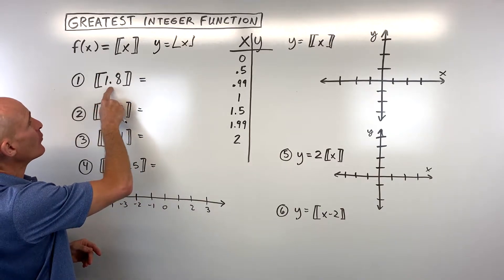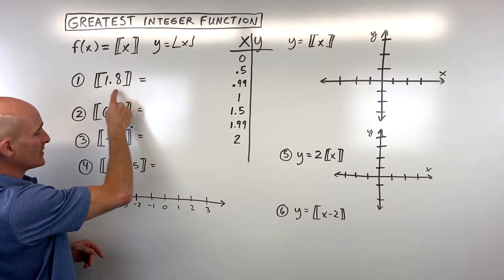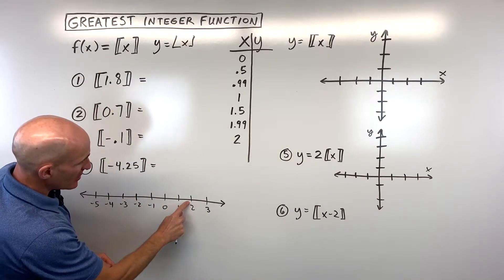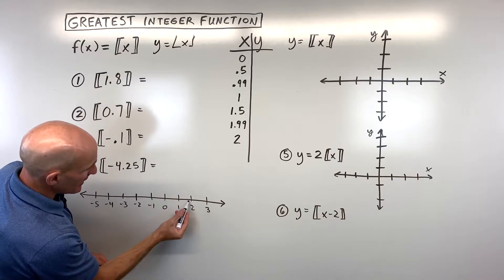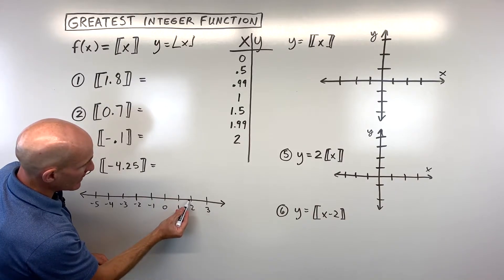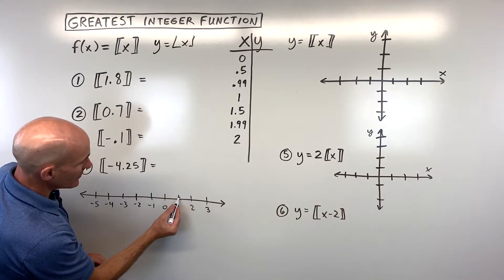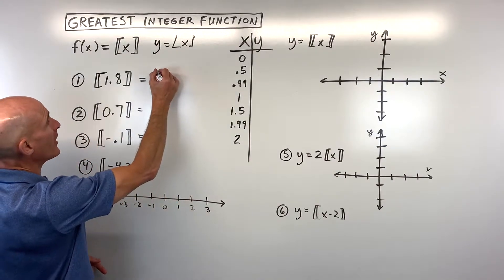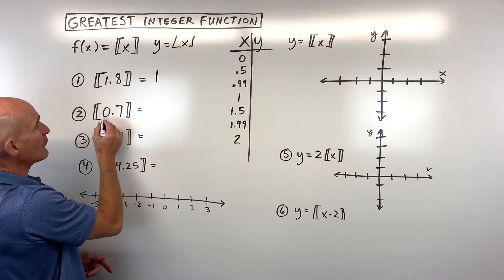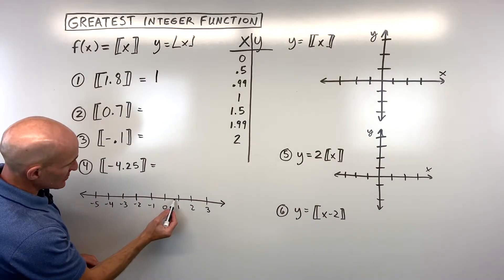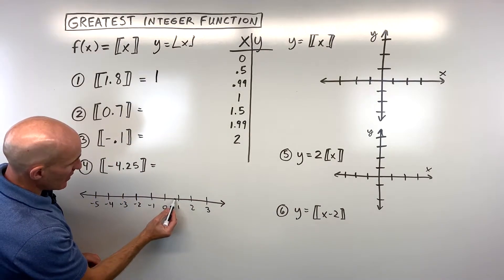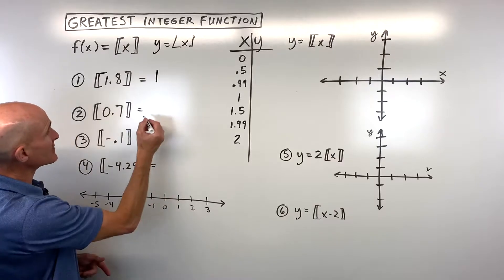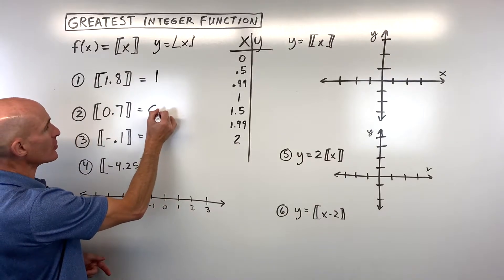Say, for example, you have 1.8. So 1.8 would put us right about here on our number line. We're going to round to the left — that's going to be 1. If we have 0.7, that's right about here. We're going to round to the left — that's going to give us 0.